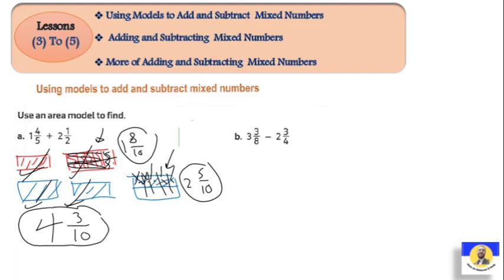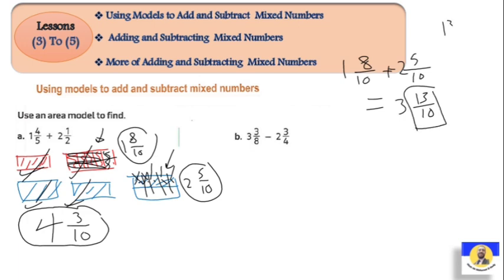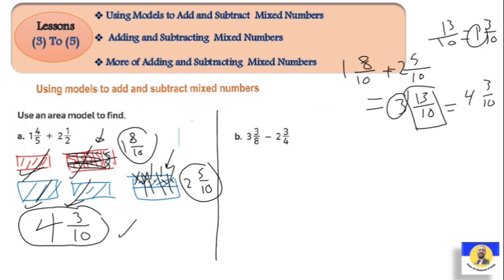Now let's verify using the standard addition method we learned for like denominators. With two and five over ten: eight over ten plus five over ten equals thirteen over ten. That gives one and three over ten extra. Adding one to the three whole numbers gives the answer four and three over ten - the same answer we got with the drawing method.